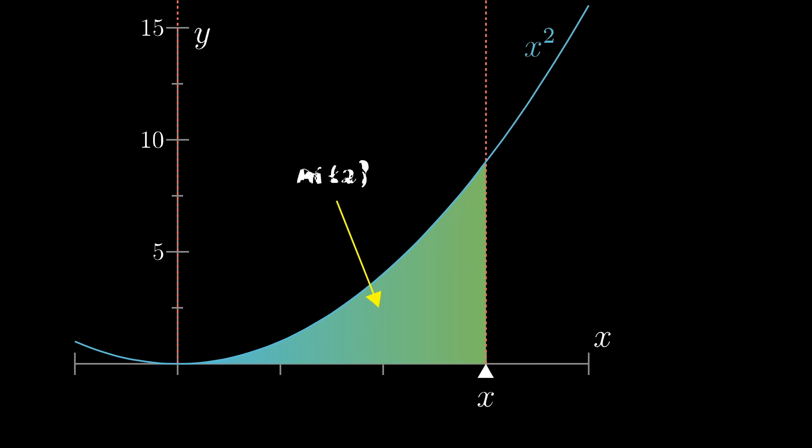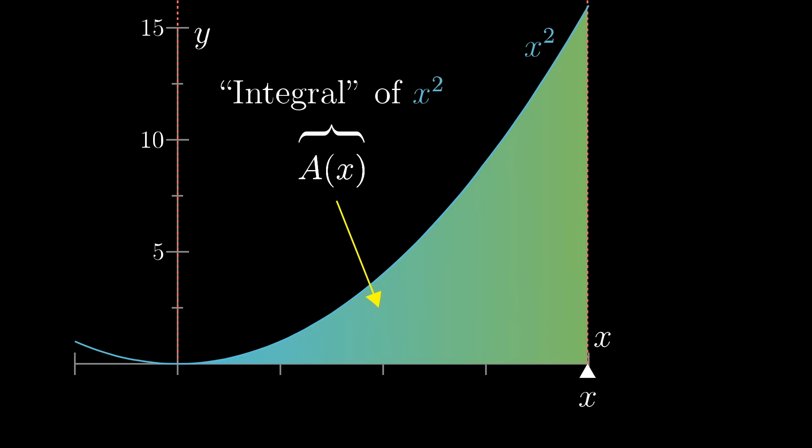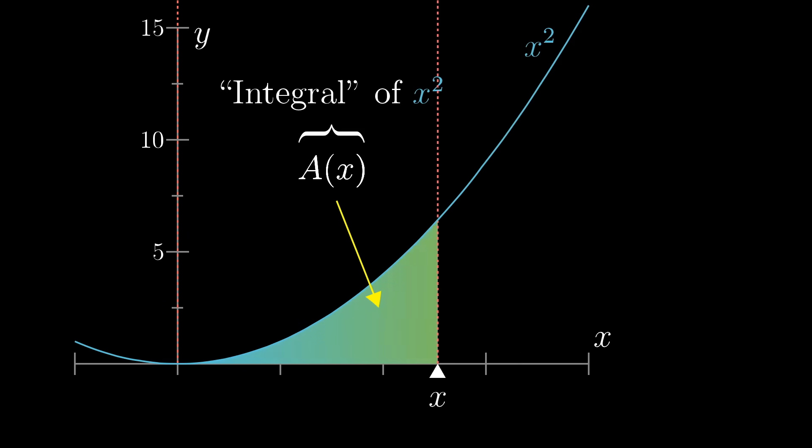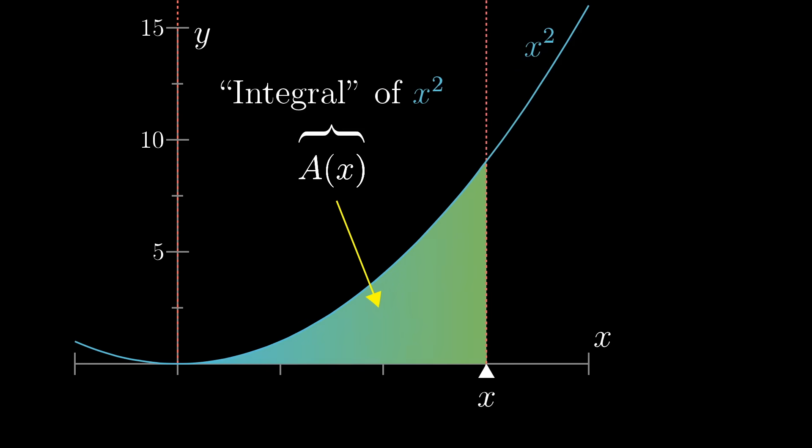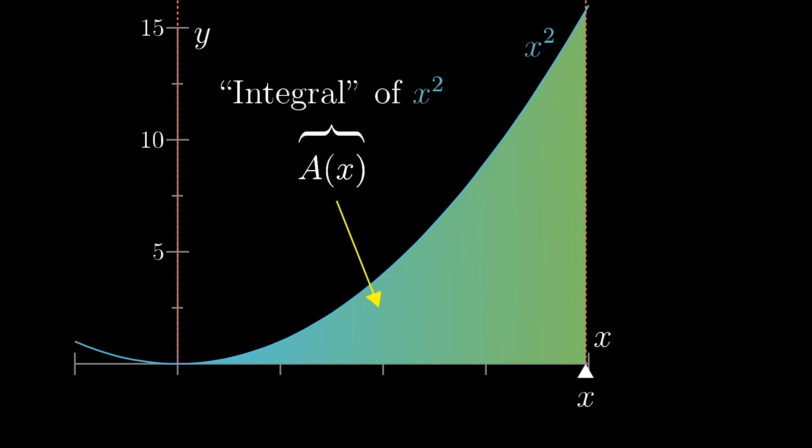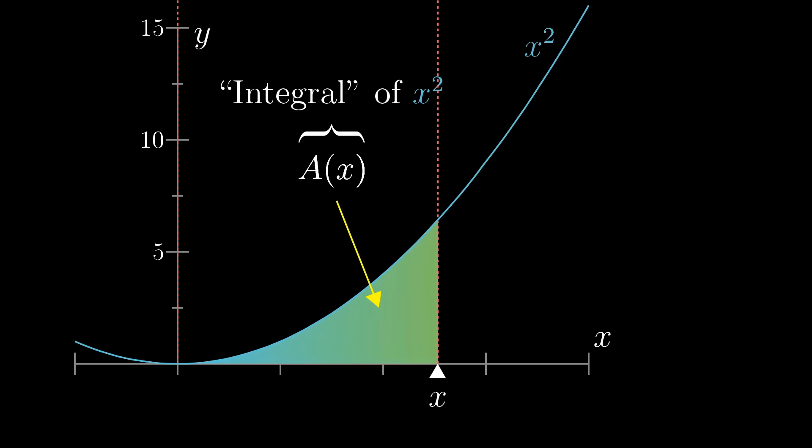Are you able to find a function, A of x, that gives you the area under this parabola between 0 and x? A function A of x like this is called an integral of x squared. Calculus holds within it the tools to figure out what an integral like this is, but right now it's just a mystery function to us. We know it gives the area under the graph of x squared between some fixed left point and some variable right point, but we don't know what it is.